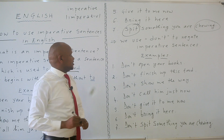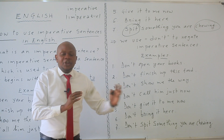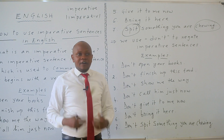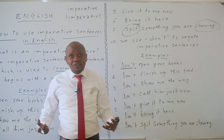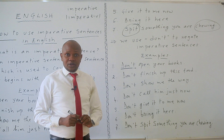Then we use 'don't' to negate imperative sentences. You place 'don't' before the verb — that time you are also commanding. For example, if I say: don't open your books. I am still commanding you. Don't open your books — meaning someone else needs those books closed.